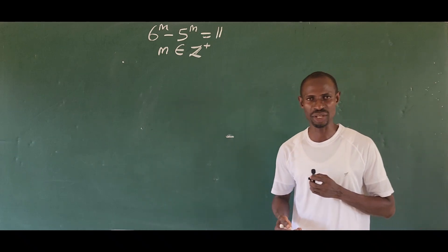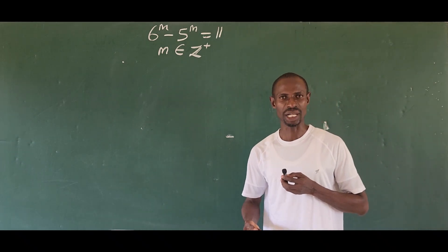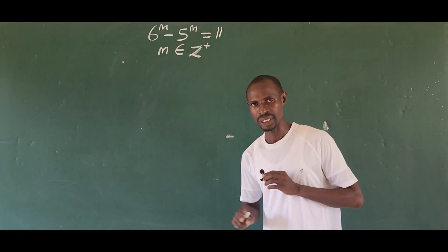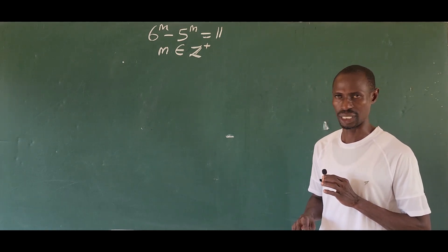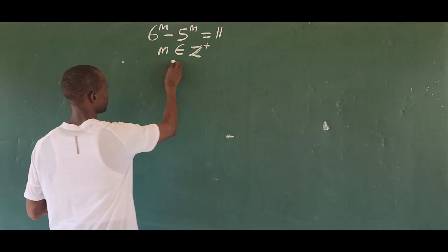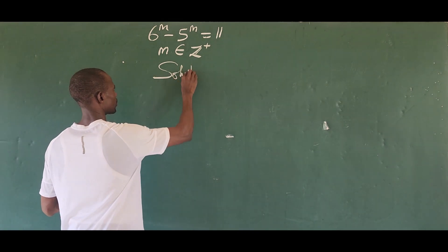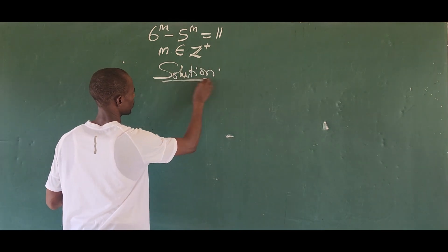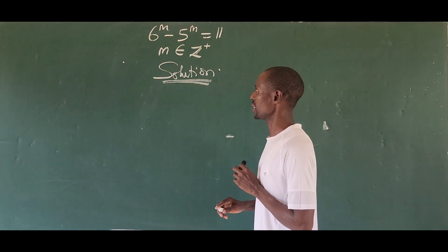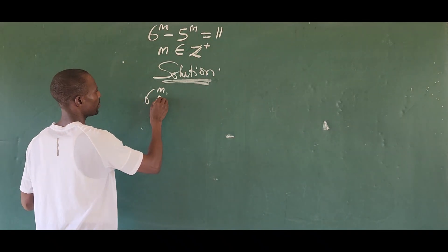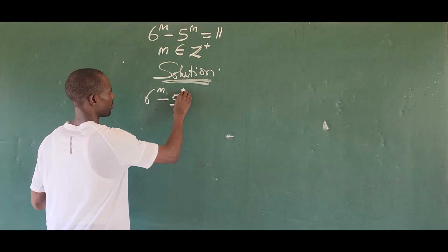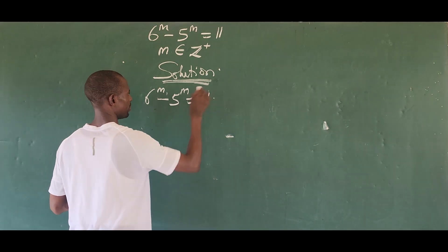But in case of entrance exam where you are made to show your solving on how to get that value, two, how do you go about that? That is the essence of this video clip. So let's take our solution. Now, the first thing we're going to do here is this. Let's put out the question we have here. Six to the power of m minus five to the power of m equals to eleven.